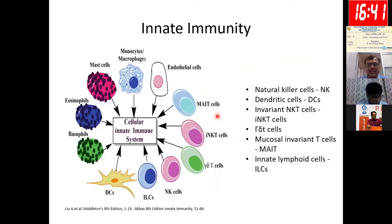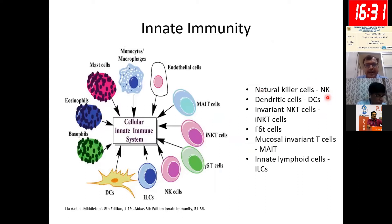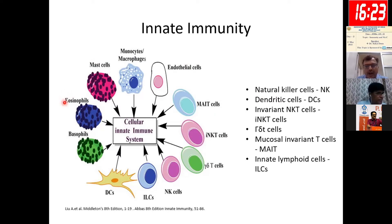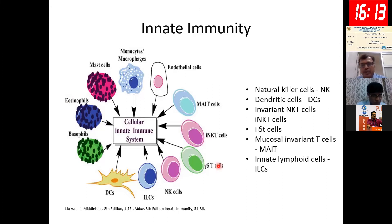These are a few of the cells involved in the innate immune process. NK cells are very important, along with dendritic cells, endothelial cells, monocytes or macrophages, mast cells, eosinophils, basophils, and gamma delta T cells. These are only a few; in practice, a host of many cells are involved in the innate immune process.